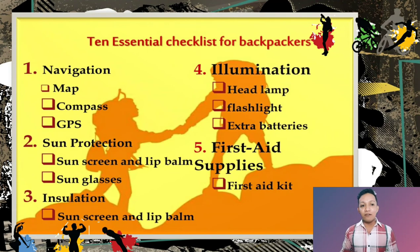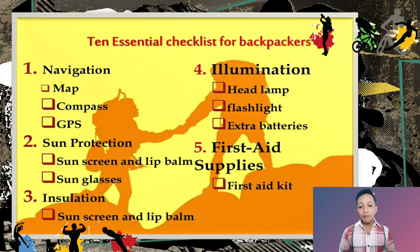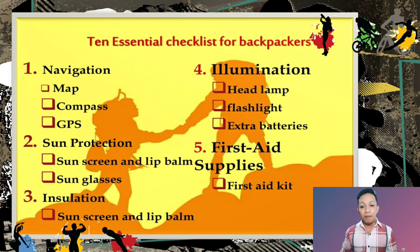The 10 essential checklist for backpackers includes navigation tools such as a map, compass, and GPS, as well as sun protection items like sunscreen and lip balm.